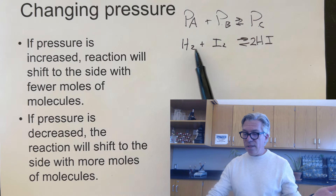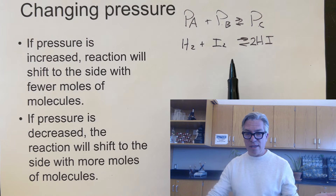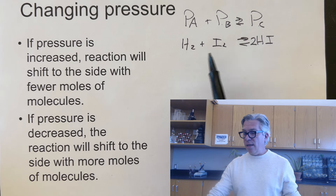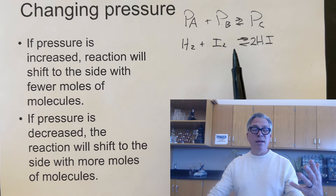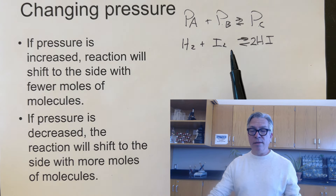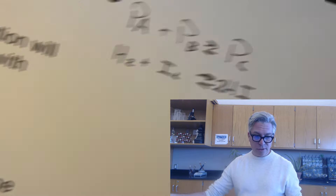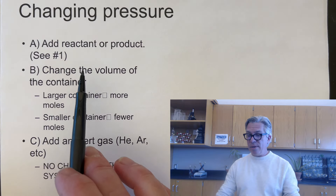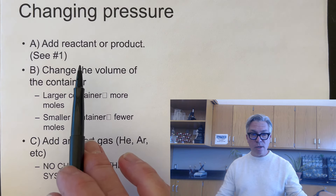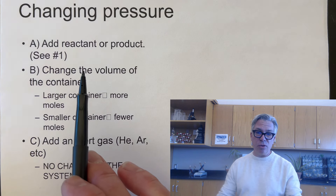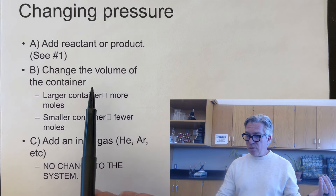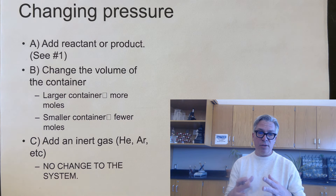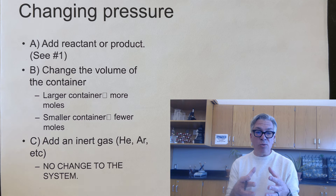There are a couple of ways you can change pressure. One is to add or subtract a reactant or product, which goes back to changing concentrations — pressure is proportional to concentration. You can also change the volume of the container: if the container gets larger, it shifts to the side with more molecules; if the container is smaller, it shifts to the side with fewer molecules.